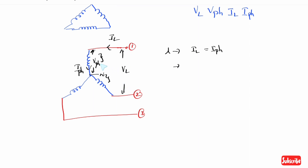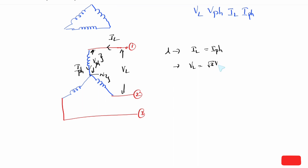So, line voltage is equal to E voltage plus E voltage. We add them vectorially, so line voltage is equal to root 3 into phase voltage. This is for star connection.